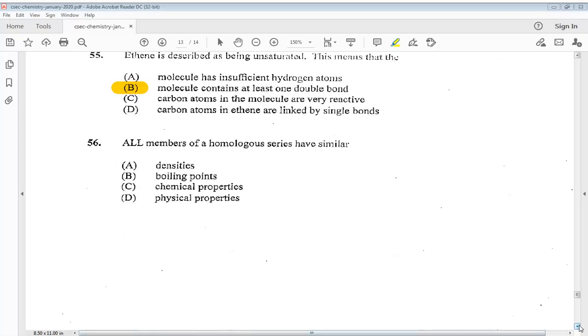Question 56. All members of a homologous series have similar A densities, B boiling points, C chemical properties, or D physical properties. So it would be C chemical properties.